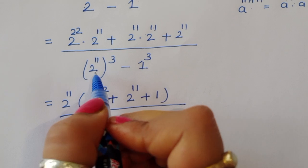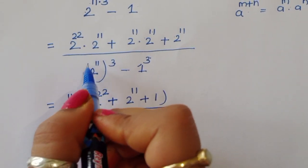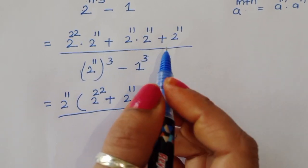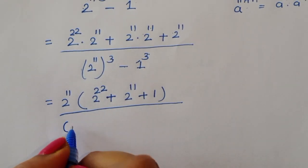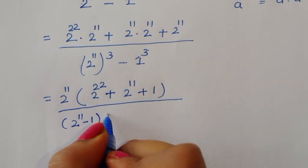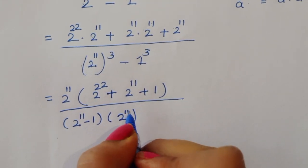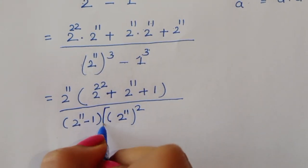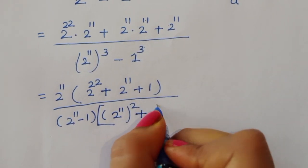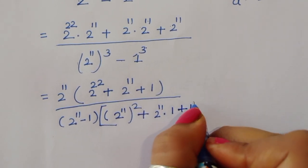The denominator is in the form of a cube minus b cube, where a = 2 power 11 and b = 1. Using the formula a cube minus b cube = (a minus b)(a squared + ab + b squared), we get (2 power 11 minus 1)(2 power 22 + 2 power 11 times 1 + 1 squared).